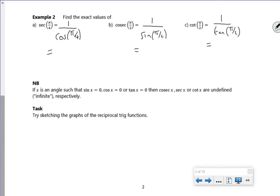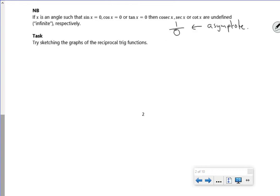It says if x is an angle such that sin x = 0, cos x = 0, or tan x = 0, then cosecant, secant, and cot are undefined. That's because you can't really do 1 over 0. So you've got to be careful with that. What it means is where sine of x is 0, or cos of x is 0, or tan of x is 0, it's got an asymptote there.